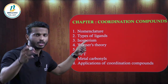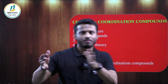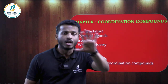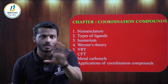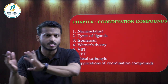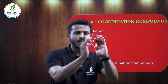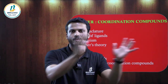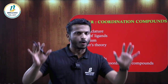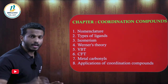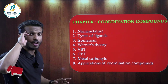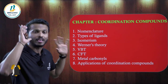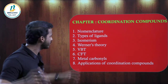For nomenclature, be careful: write the cationic part first, then the ligands in alphabetical order. After the metal, write the oxidation state in Roman numerals in brackets. Write everything correctly. Study the types of ligands carefully — especially which are ambidentate and which are chelating ligands, with examples.